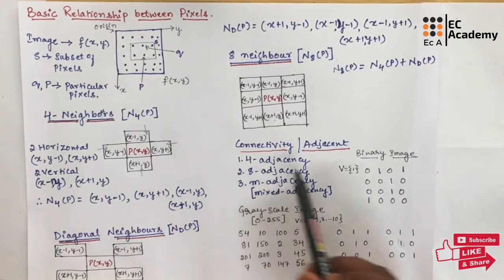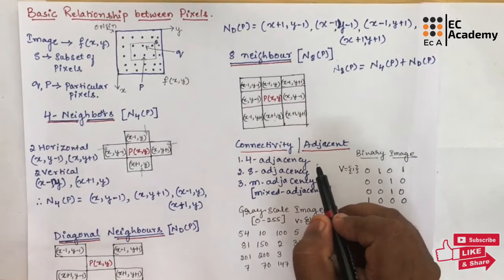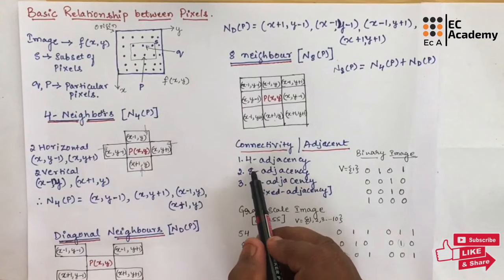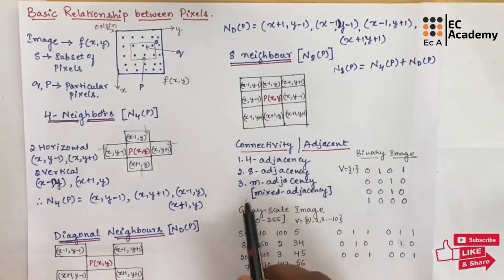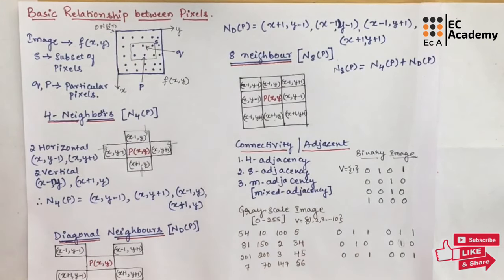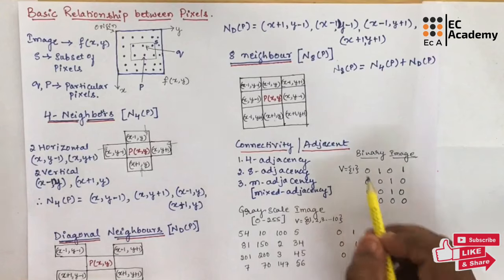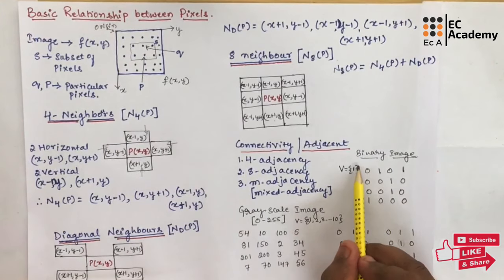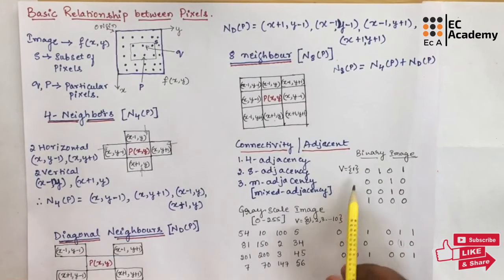Next we will understand connectivity, also known as adjacency. Connectivity is very important for image processing. There are three types: 4 adjacency, 8 adjacency, and M adjacency, also known as mixed adjacency. First let us understand 4 adjacency and 8 adjacency. We consider a binary image and take the set V with value 1, meaning we concentrate on the value 1 in the image. A binary image consists of both 0s and 1s.